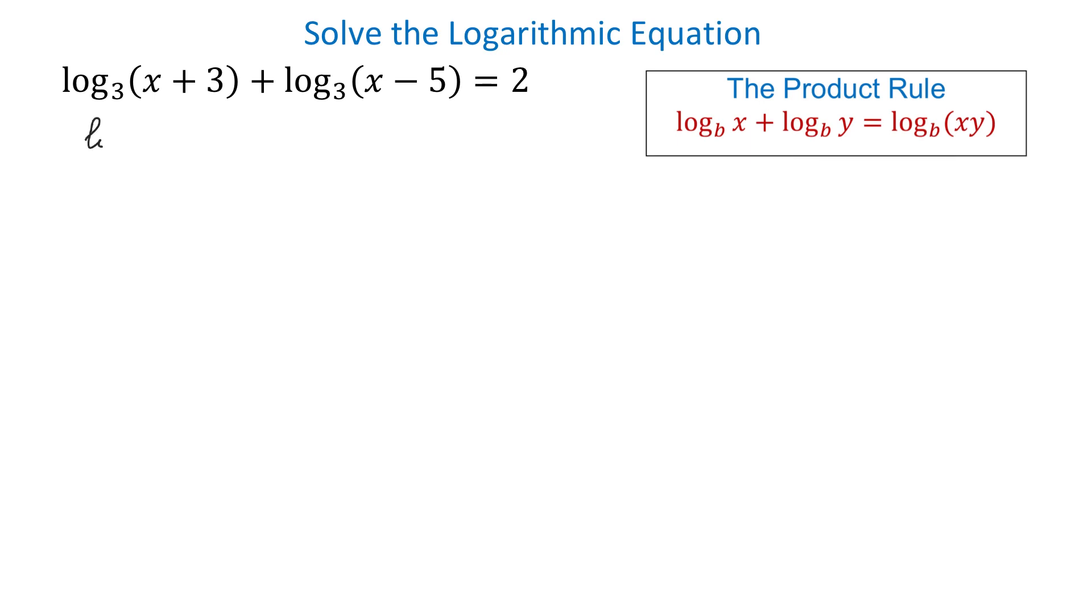According to this rule, we will write the left side as log base 3 of x plus 3 times x minus 5. Then all this will equal 2. Now we have an equation that has only one logarithm on the left side, and in this equation, 3 represents the base, 2 represents the exponent, and x plus 3 times x minus 5 represents the result.